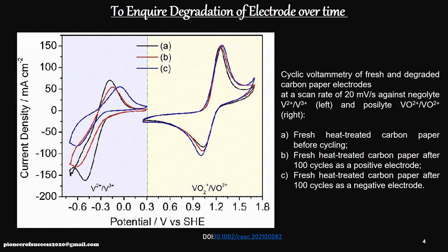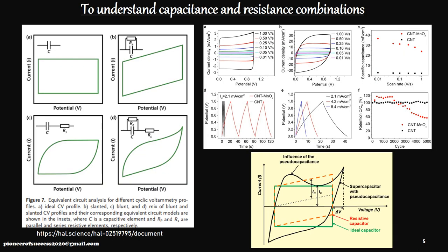By looking at the qualitative nature of the CV curve, we can get important information. For example, if you are working with a lithium-ion battery and perform characterization over different charge-discharge cycles, you can expect changes in the CV curve. From those qualitative changes, you can decipher the degradation kinetics of that particular lithium-ion electrode.